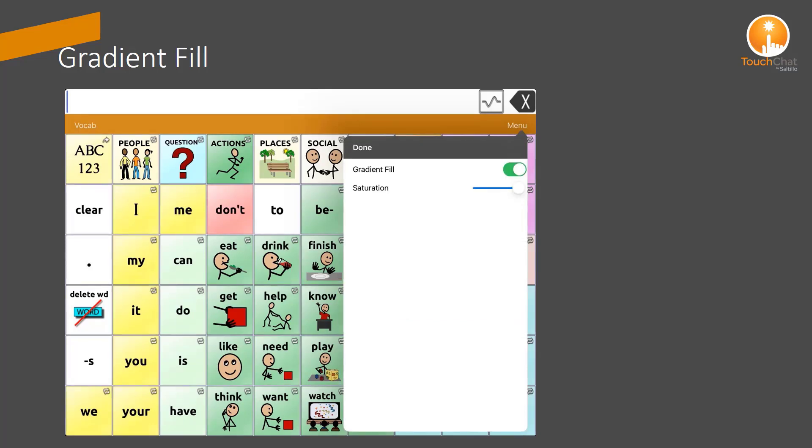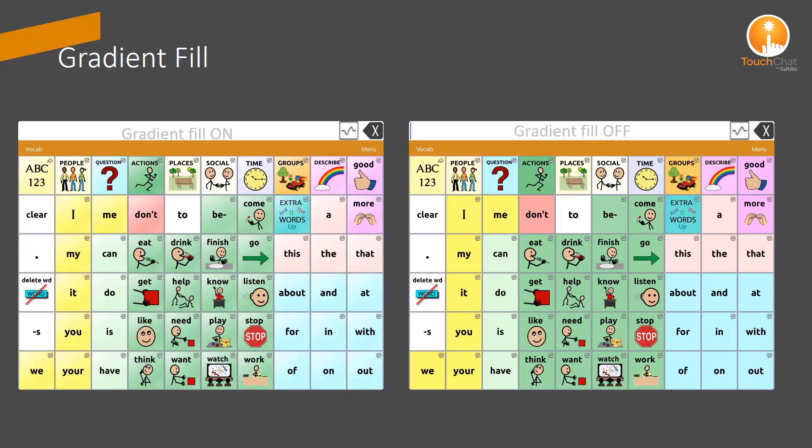We tap the Gradient Fill option and can turn the feature on and adjust the saturation or turn it off. On the left, the buttons appear with Gradient Fill on, and on the right shows Gradient Fill off.